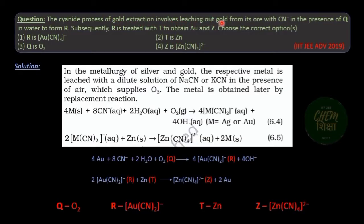This question is about the leaching process of gold ore and we have to identify the missing reagents involved in this process. This question was asked in IIT JEE Advance 2019.